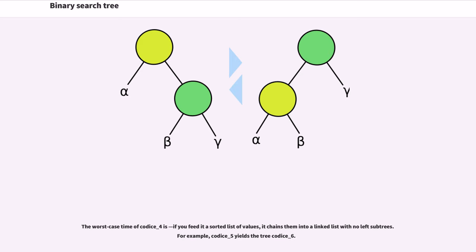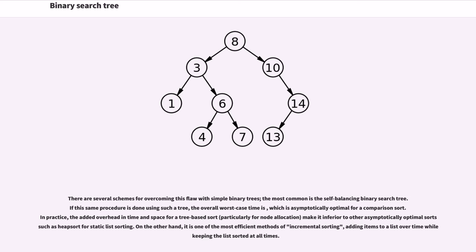There are several schemes for overcoming this flaw with simple binary trees. The most common is the self-balancing binary search tree. If this same procedure is done using such a tree, the overall worst case time is, which is asymptotically optimal for a comparison sort. In practice, the added overhead in time and space for a tree-based sort, particularly for node allocation, make it inferior to other asymptotically optimal sorts such as heap sort for static list sorting. On the other hand, it is one of the most efficient methods of incremental sorting, adding items to a list over time while keeping the list sorted at all times.